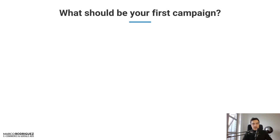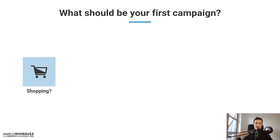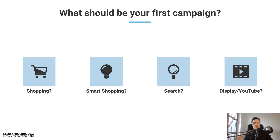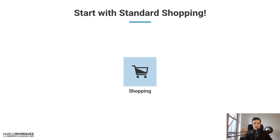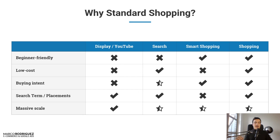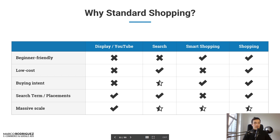The first phase — the initial setup. The most common question is: what should your first campaign type be? Is it shopping, smart shopping, search, display, or YouTube? My very clear recommendation for anyone starting out now, or redesigning their Google Ads account, is standard shopping. I prepared a table with four main campaign types and five different factors: beginner friendliness, low cost, buying intent, search term visibility, and massive scale. With standard shopping, four of these five criteria are fulfilled very well.